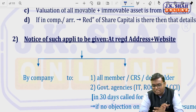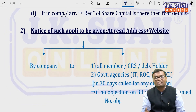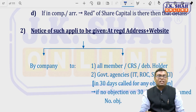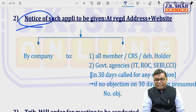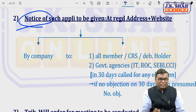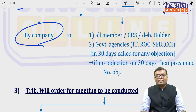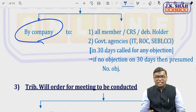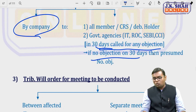Notice of such application must also be given at the registered address and on the website. This notice period — from application to finalization — is when insider trading risk is highest for listed companies. The company must send the notice to every member/shareholder, every creditor, every debenture holder, and every sectoral regulator such as income tax authorities, ROC, SEBI, and Competition Commission of India in case of amalgamation. Objections can be invited within 30 days; if no objection is raised within 30 days, it is deemed that they have no objection to the arrangement.